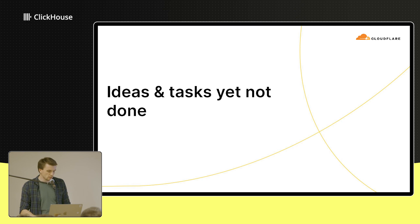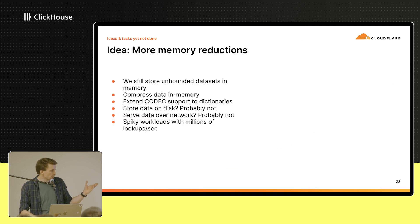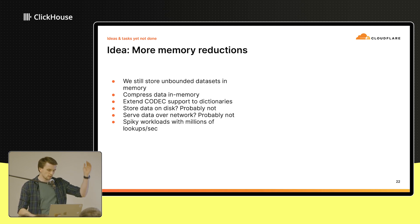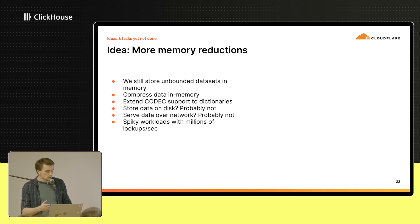I'll talk briefly about some ideas we still have. We have dictionaries that just grow in memory — they're unbounded, which is quite a scary concept. One low-hanging fruit is in-memory compression for dictionaries. Several of our large dictionaries have attributes that are just a column of almost all zeros, with no compression at all. If we could compress this, or maybe get codec support from MergeTrees added to dictionaries, we could save a lot more memory still.